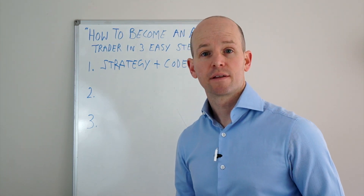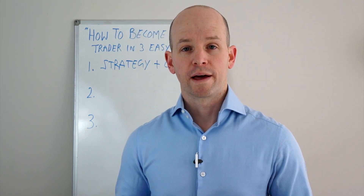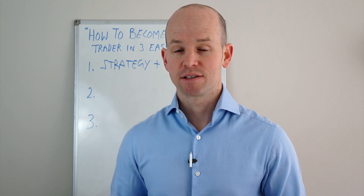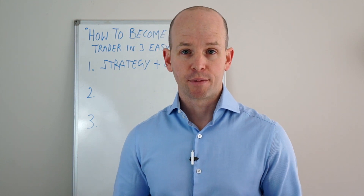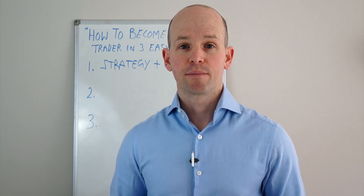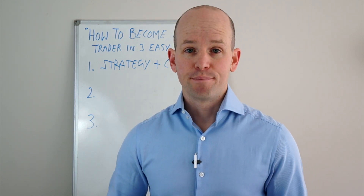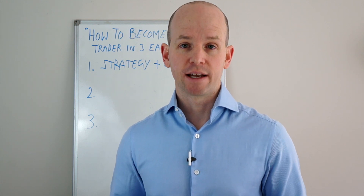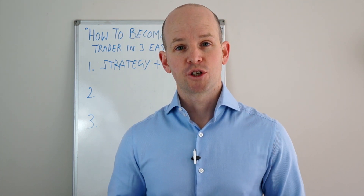Once we have the rules for that strategy, we need to code the strategy or program the software. What that does is it takes our rules in plain English and writes them into the software so the software understands how we're going to take these trades. I've got another video on how to create a trading algorithm. It doesn't have to be very difficult — it can be really quite simple. For example, buy if we see a breakout above a 10-day high and sell if we see a break below the 5-day low. You'd probably want to include a stop loss in there too.